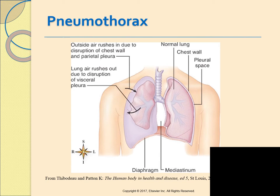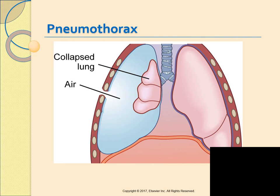You can have an open pneumothorax, where air enters through an opening in the chest wall coming through the parietal outer lining of the pleura. There is also a closed pneumothorax, which occurs when the inner lining of the pleura is disrupted and air comes in from the lung — there would be no external wound in this situation. A picture shows air surrounding the collapsed lung, which illustrates why a chest tube is needed.